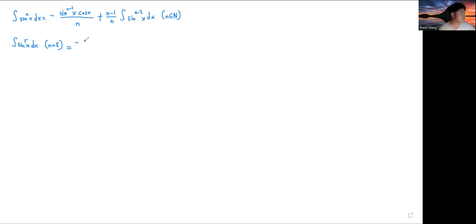And so this is just equal to negative sine 4 x cos x over 5 plus 5 minus 1 over 5, so that's 4 over 5 sine cubed x dx. And now we have this time n is equal to 3.